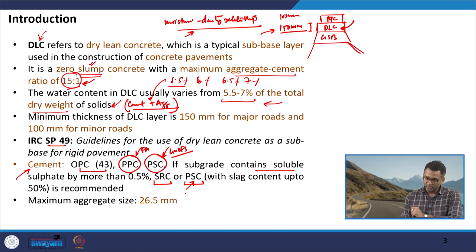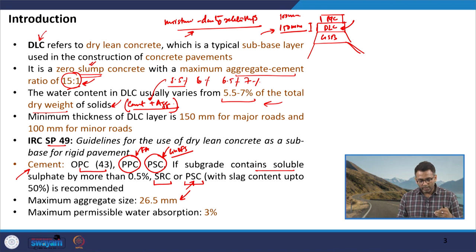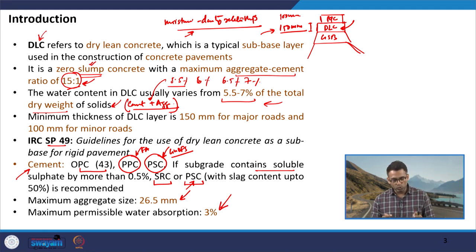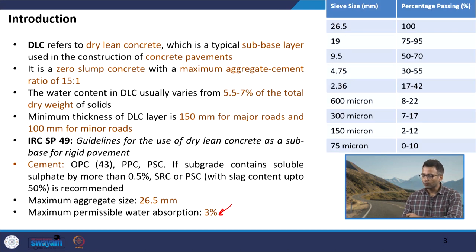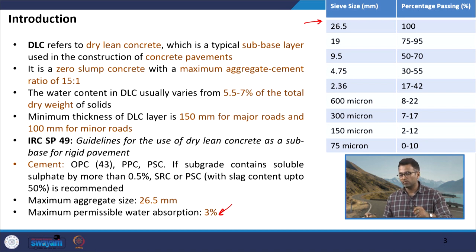The maximum aggregate size used in DLC is 26.5 mm, and there is only one gradation, in contrast to the multiple gradations for different nominal maximum aggregate sizes in PQC. For both coarse and fine aggregates, the maximum permissible water absorption is 3 percent, whereas in PQC it was 2 percent. Sand from zones 1 to 4 can be used.